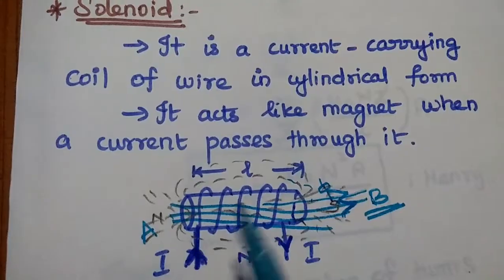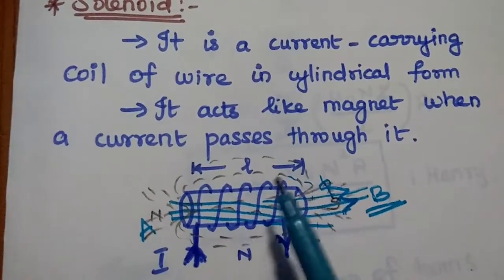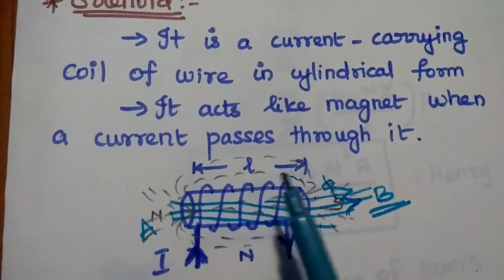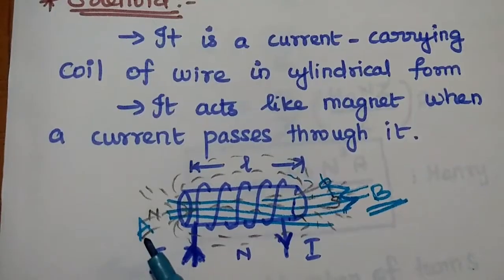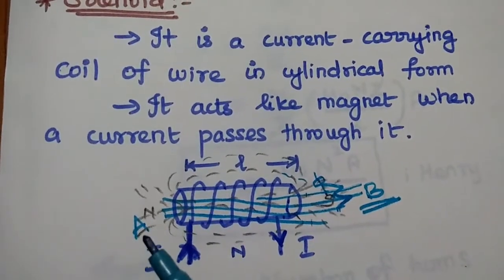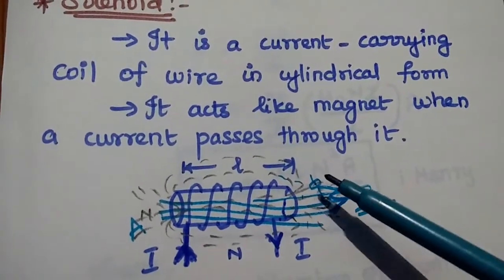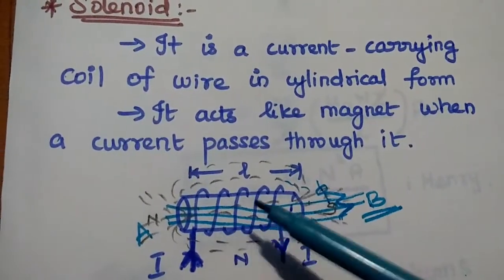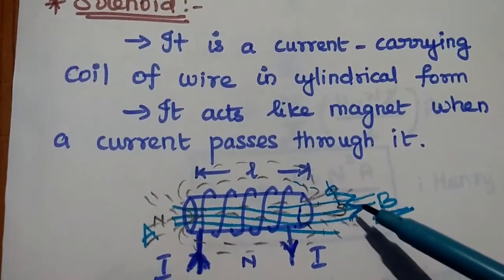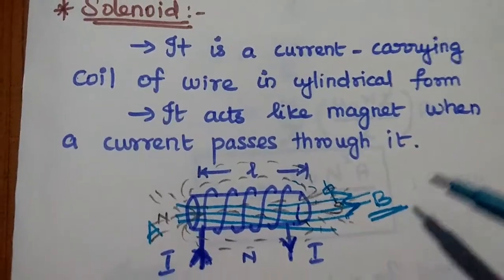Here, I is the current flowing through the coil. Capital N is the number of turns in the coil. Small l is the length of the solenoid. Capital A is the cross-sectional area of the solenoid. Phi is nothing but the flux linkage around the solenoid, and the direction of magnetic flux density is indicated as capital B.